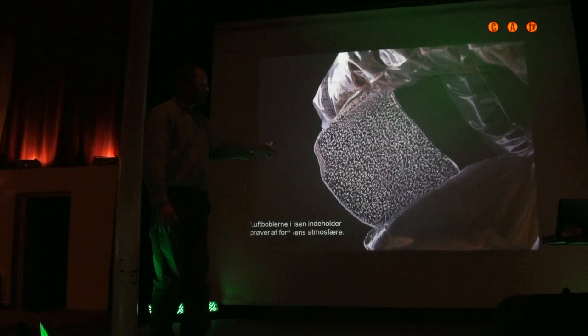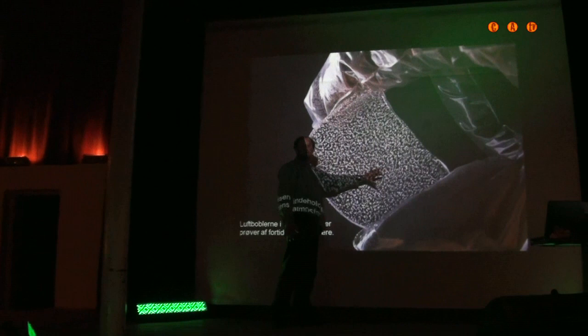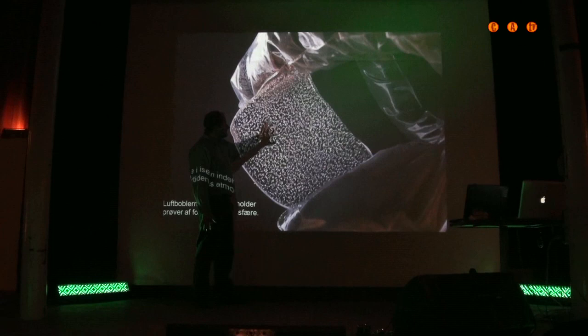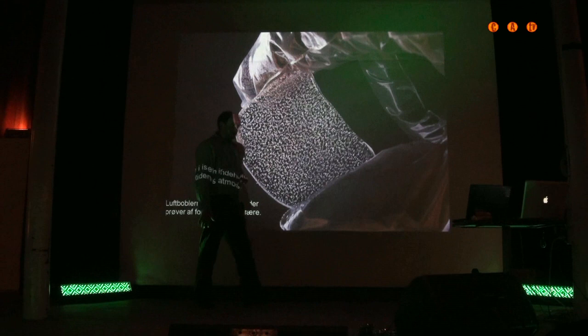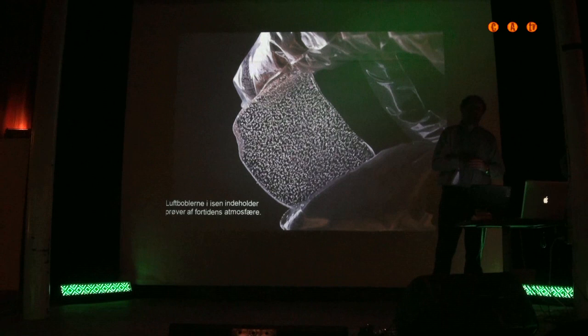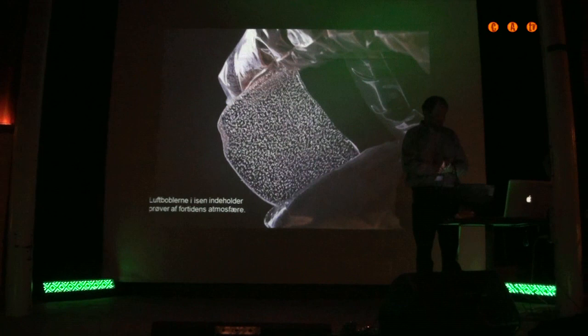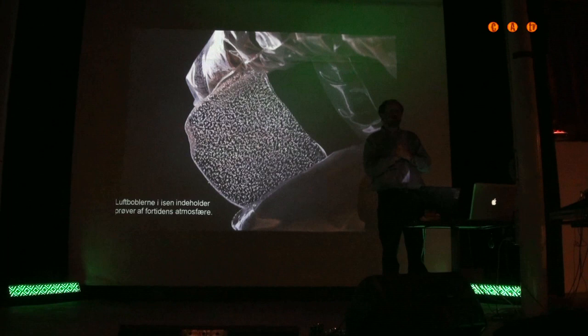The ice core not only contains the impurities of the atmosphere — like volcanic ash, sulfuric acid, and dust — it also contains samples of the air before we started to pollute it. That's why these ice cores represent our very best source of information on past atmospheric composition. Through our work, we have provided the international community with the first fixed numbers on how much greenhouse gas was in the atmosphere before industrialism began.